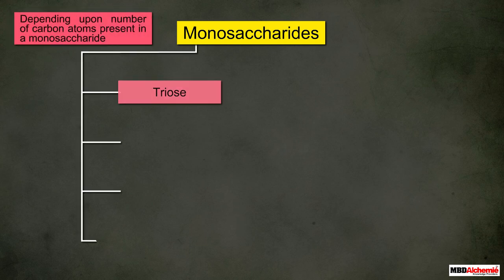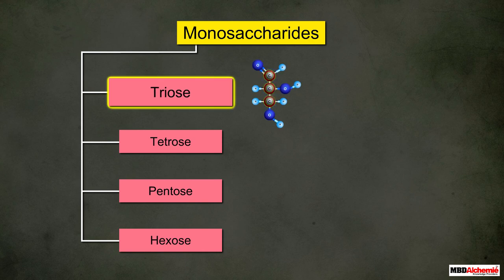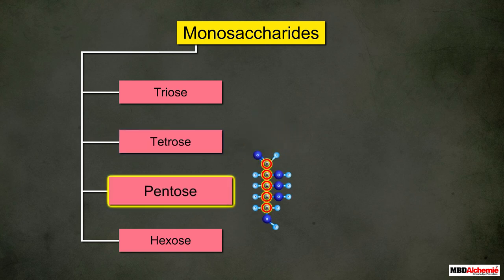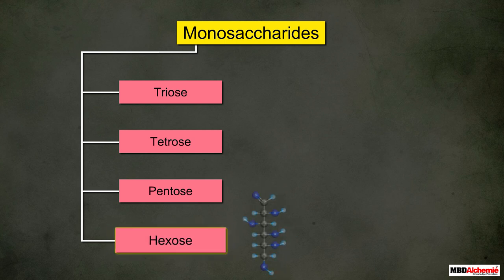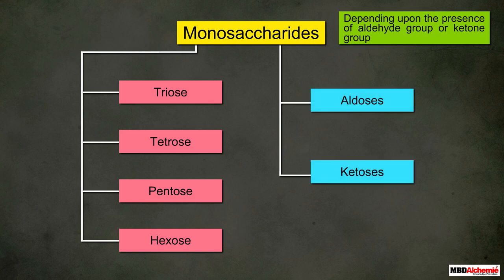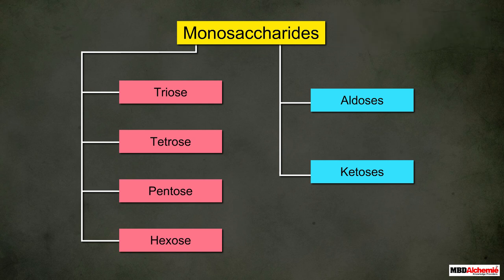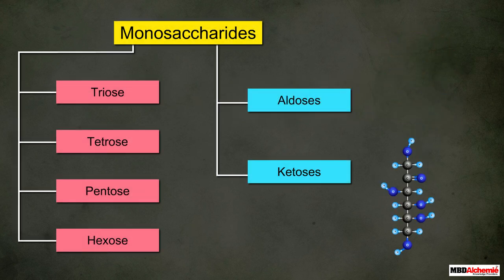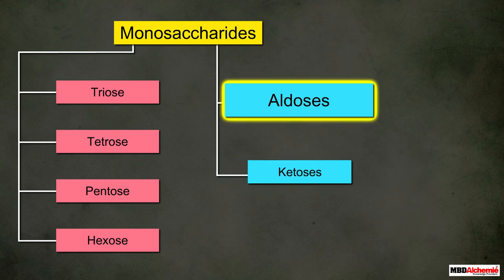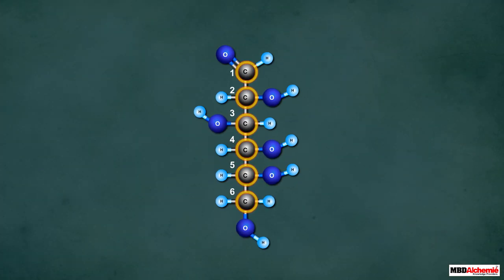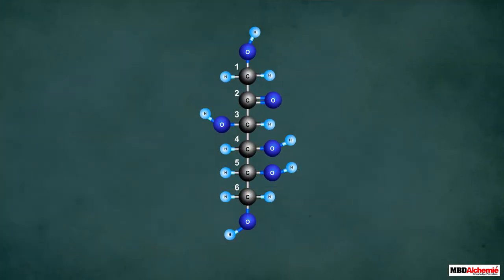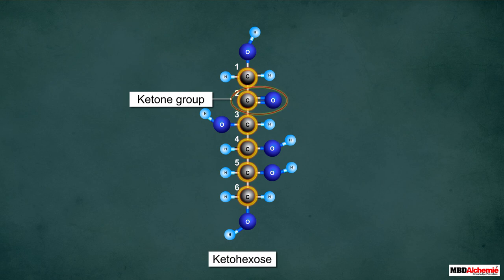Monosaccharides can be further classified depending upon the number of carbon atoms present. A triose has three carbon atoms, a tetrose has four carbon atoms, a pentose has five carbon atoms, a hexose has six carbon atoms, and so on. Monosaccharides can also be classified based on whether they contain an aldehyde group or a ketone group. Monosaccharides that contain an aldehyde group are called aldoses, while those that contain a ketone group are called ketoses. Therefore, if a carbohydrate contains six carbon atoms and an aldehyde group it is called an aldo-hexose; similarly, if it contains six carbon atoms and a ketone group it is called a keto-hexose.